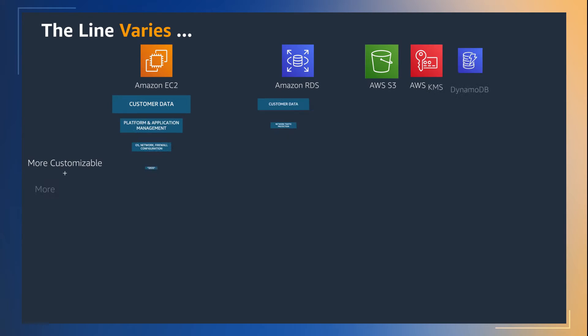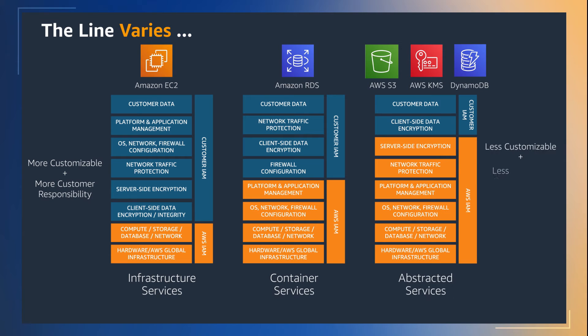If you look across all AWS services, each will have a different shared responsibility model. As shown in the slide from left to right, you can see how each service has its own unique shared responsibility model. When choosing services and designing your architecture, make sure it is clear where the responsibility lands and what you're responsible for in each one of these services.